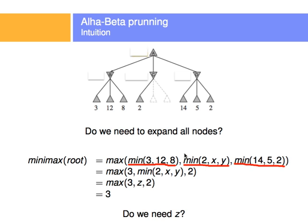The minimum here between 3, 12, and 8 is 3. The minimum, we're going to call this the minimum between 2, x and y. And then the minimum between 14, 5, and 2 is the number 2. Look what happens here. Let's call this z. This becomes the maximum between 3, z, and 2.